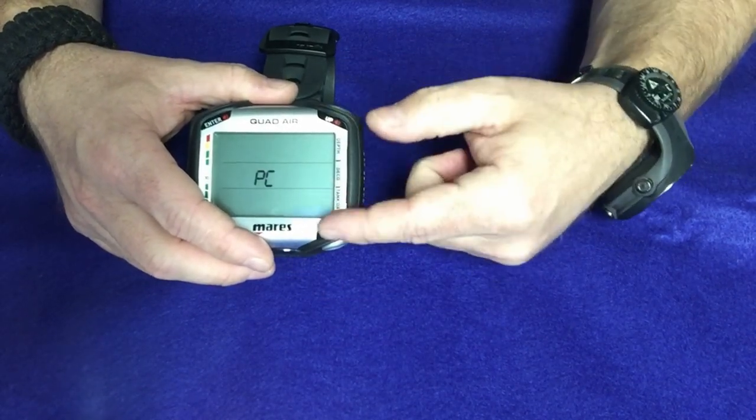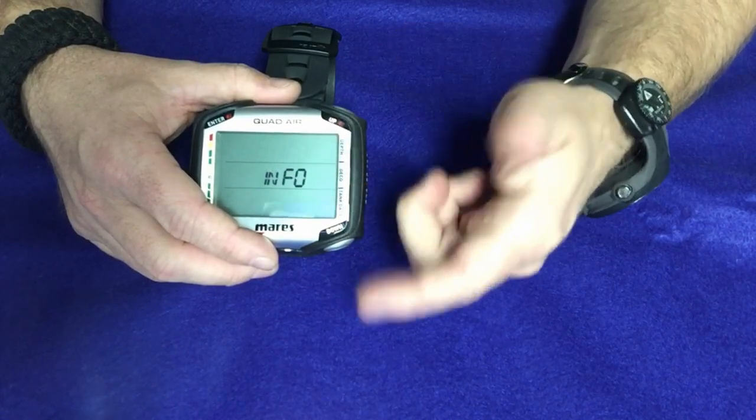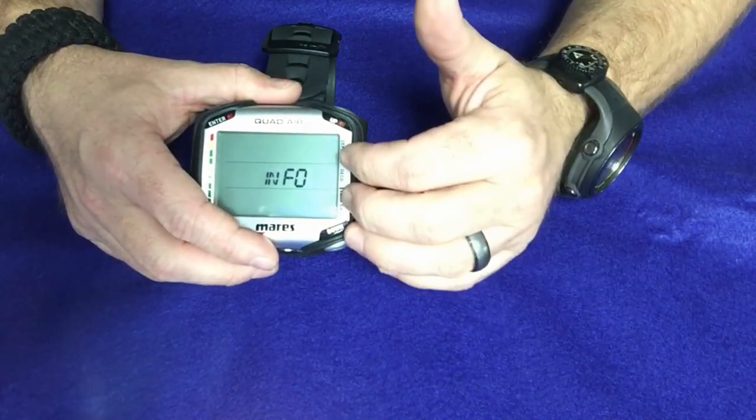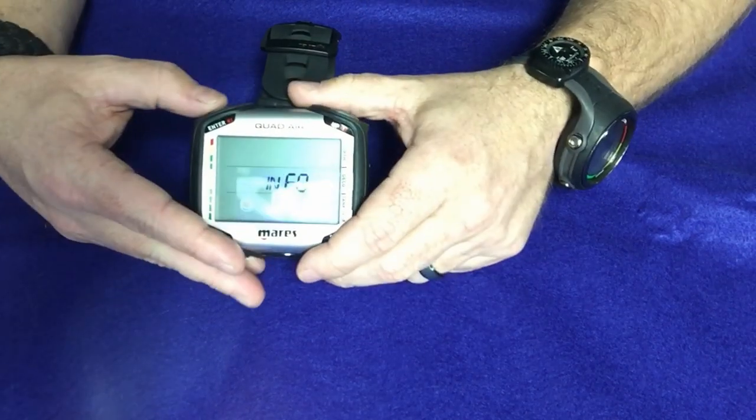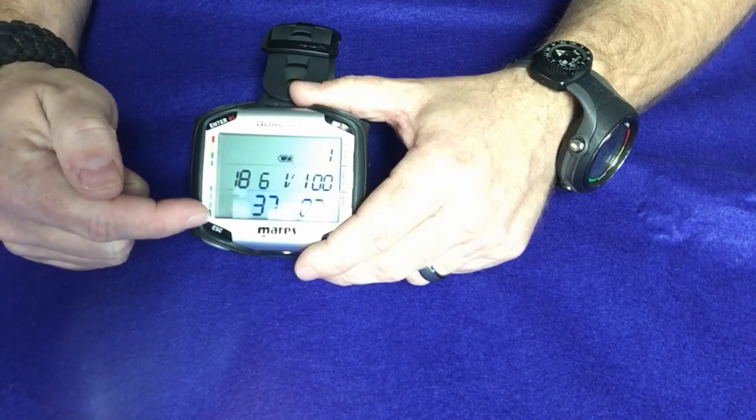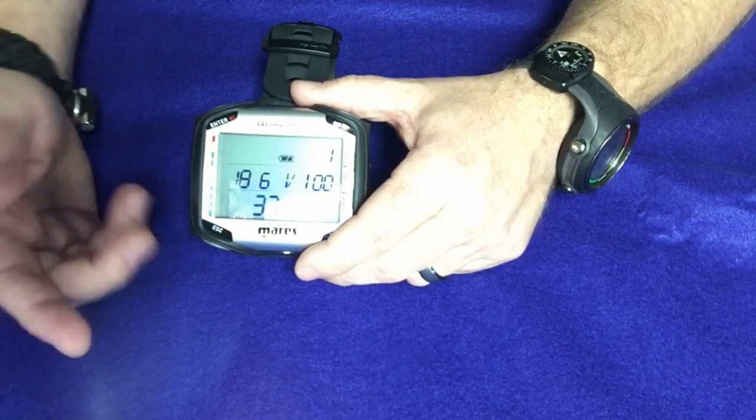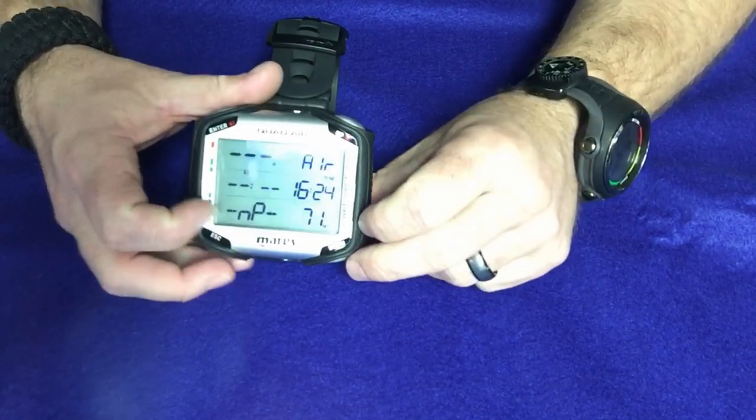We got the PC button here. And all I'm doing once again is just hitting up and down to scroll through. The PC is going to allow you to connect it to a computer or connect it to the Blue Link system. If you go into the info here, you simply click enter. This is going to tell you your battery power. It'll also tell you the serial number of the computer and all that other information as well.